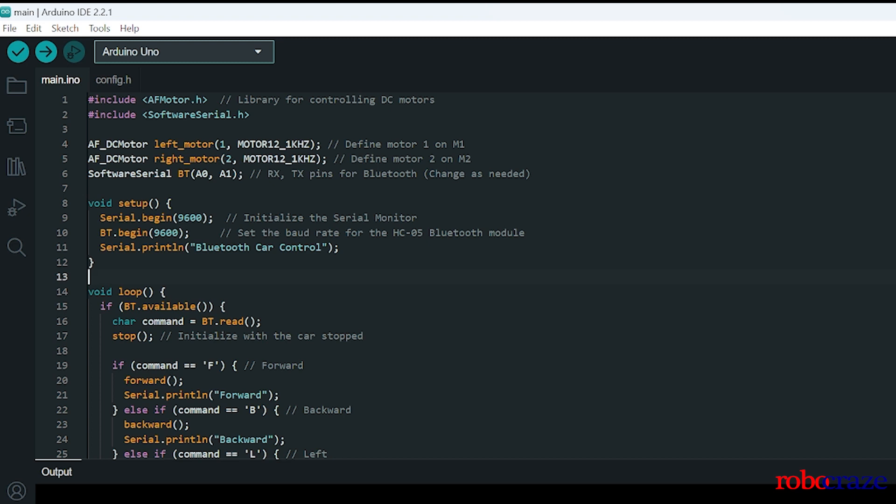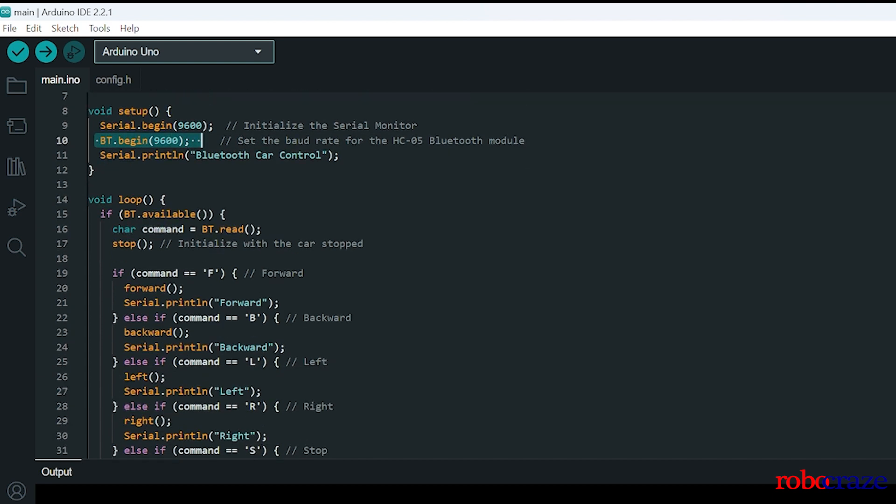Next we are initializing motors. Left motor which will be connected to M1 and right motor will be connected to M2. And SoftwareSerial will be using pin number A0 and A1. A0 will be RX and A1 will be TX. Next in setup function we will be establishing the serial communication between the normal serial communication and the Bluetooth serial communication which uses pin number A0 and A1.